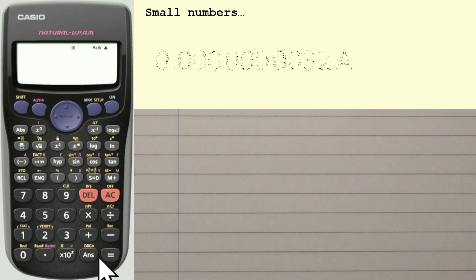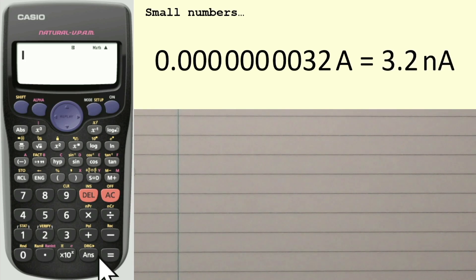And here's a very small number. So this is a current, 0.00000000032 amps. A more efficient way of writing that would be 3.2 nanoamps. Nano is another one of these prefixes that we'll need to actually memorize, as well as mega and another 4.